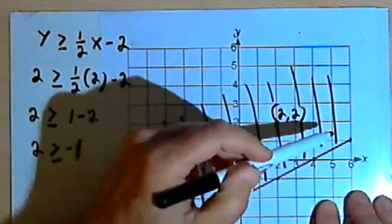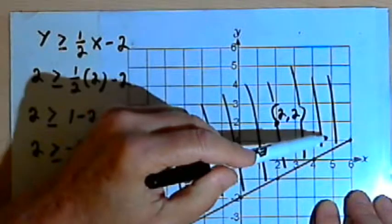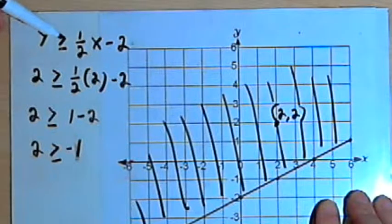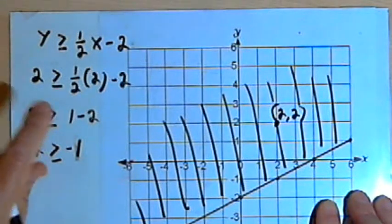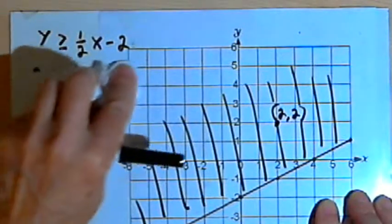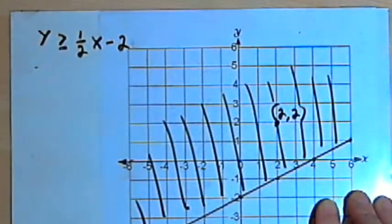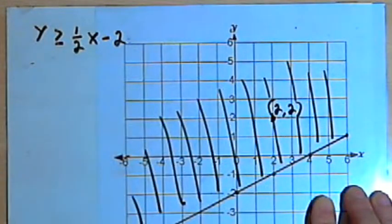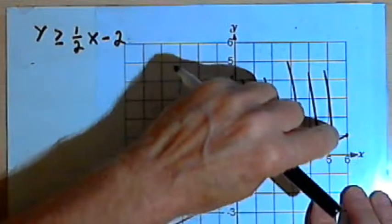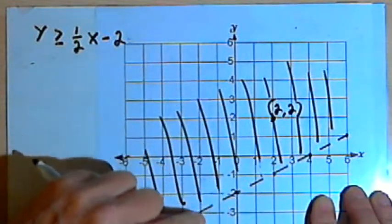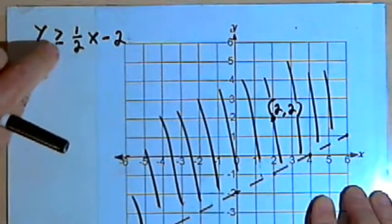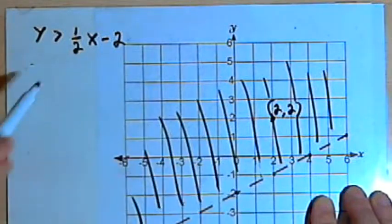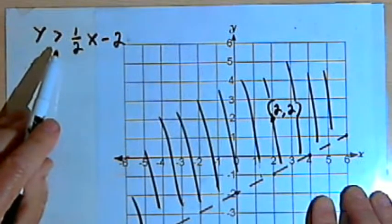If this is true, then we could pick any point in that shaded area and it would satisfy this inequality. Now notice the inequality was greater than or equal to. If we didn't have that or equal to part, instead of drawing a solid line, what I would do is have a dotted line. So we use a solid line when it's greater than or equal to or less than or equal to. We use a dotted line if we don't have the or equal to part.